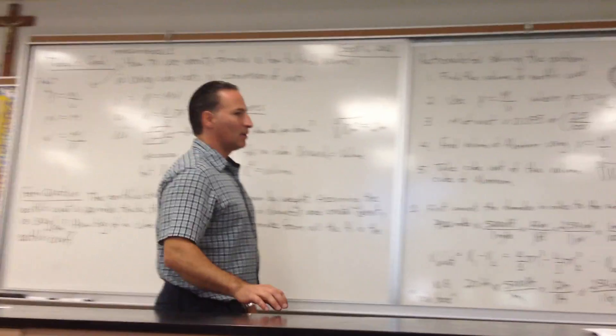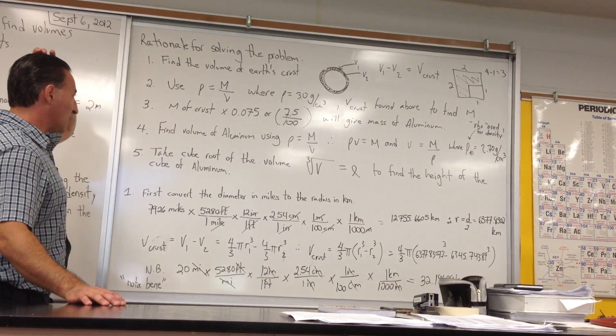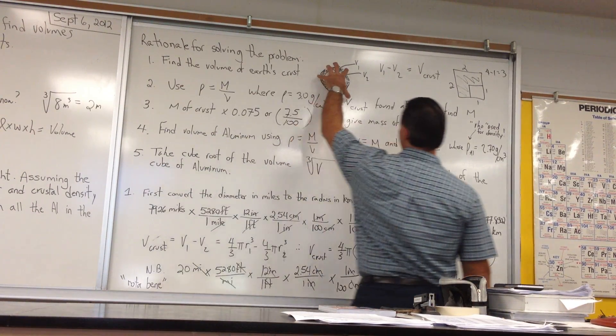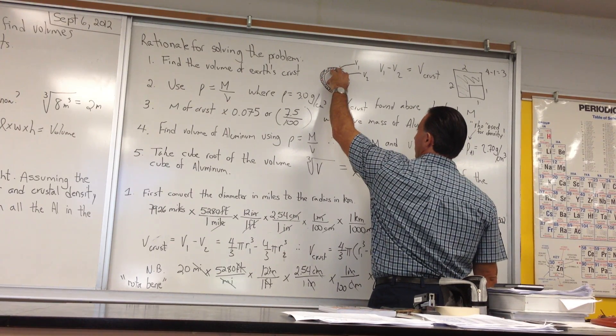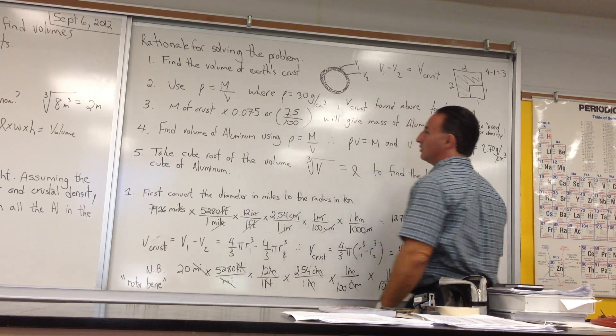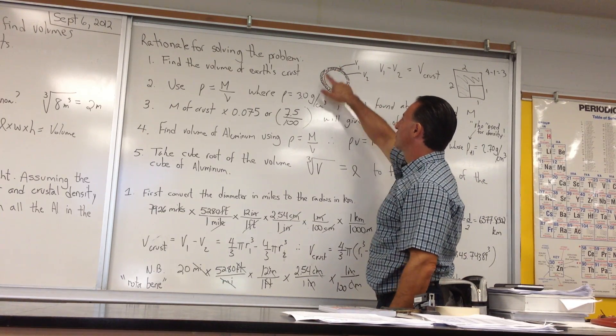Here's the rationale for solving this problem. We're going to have five steps. The first step is to find the volume of the Earth's crust. We're going to calculate the volume of the entire Earth, then calculate the volume of the part that lies just beneath the crust. By subtracting those two, volume 1 minus volume 2, you'll find the difference, and that's the volume of the crust.